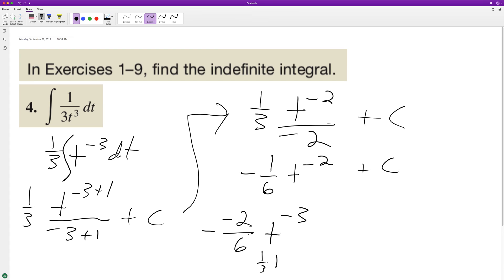This ends up being 1 third t raised to negative 3 or 1 over 3 t cubed. So here's our final result. And if you want you could put t squared on the bottom there but it's fine.